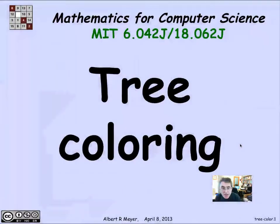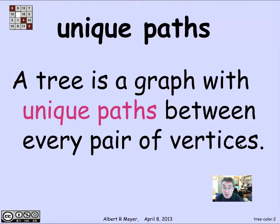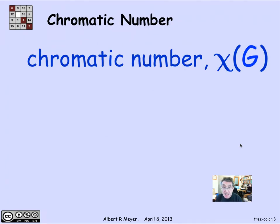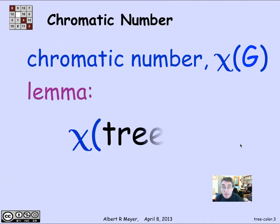We can use the unique path characterization of trees to very quickly figure out that every tree is two-colorable. We know that a tree is a graph with unique paths between every pair of vertices. As a consequence, the chromatic number of a tree with two or more vertices is two.